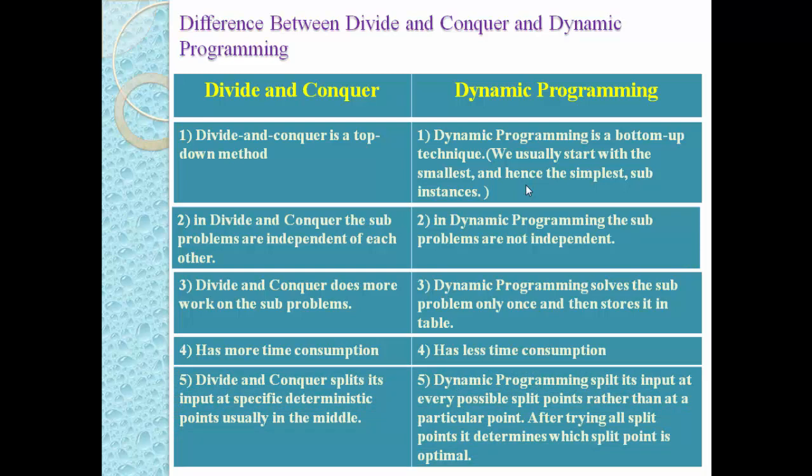In divide and conquer, the input is split at a specific deterministic point — usually in the middle, dividing the large instance into two parts. But in dynamic programming, the input is split at every possible split point rather than at a particular point. After trying all split points, it determines which split point is optimal.